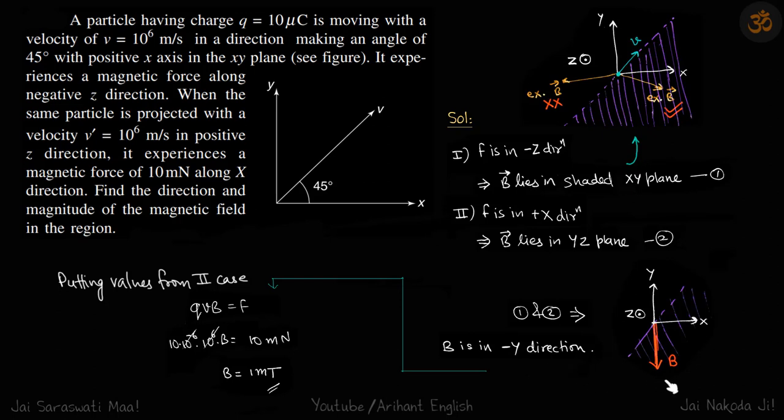So this is about the direction of the field. Now for the magnitude, we will put values from our second case. QVB equals F. We are given the values of Q, V, and F, so we will get our answer: B equals 1 millitesla.